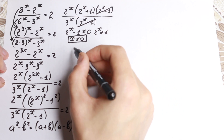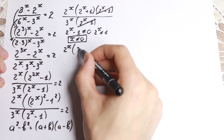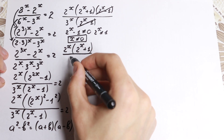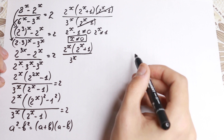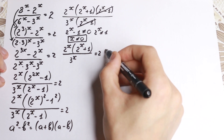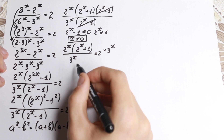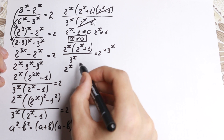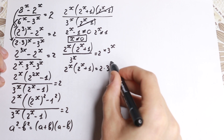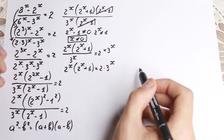After cancelling, we have 2 to the x times 2 to the x plus 1, all over 3 to the x, equal to 2. Let's multiply both sides by 3 to the x. That cancels the denominator, giving us 2 to the x times 2 to the x plus 1 equal to 2 times 3 to the x.